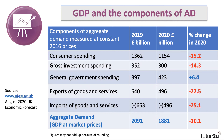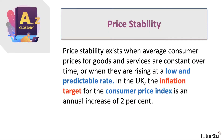Another key objective of government is price stability or low inflation. Price stability exists when average consumer prices for goods and services, measured by the Consumer Price Index, are constant over time or rising at a low and fairly predictable rate. The UK has an inflation target for the CPI of 2%. Here's the data — the inflation target is shown as the dotted brown line. You can see inflation has been above or below but not massively out of line over the last 10 years. Since 2017 the rate of inflation has on average been falling and has been below target, as you'd expect with the economy in recession.